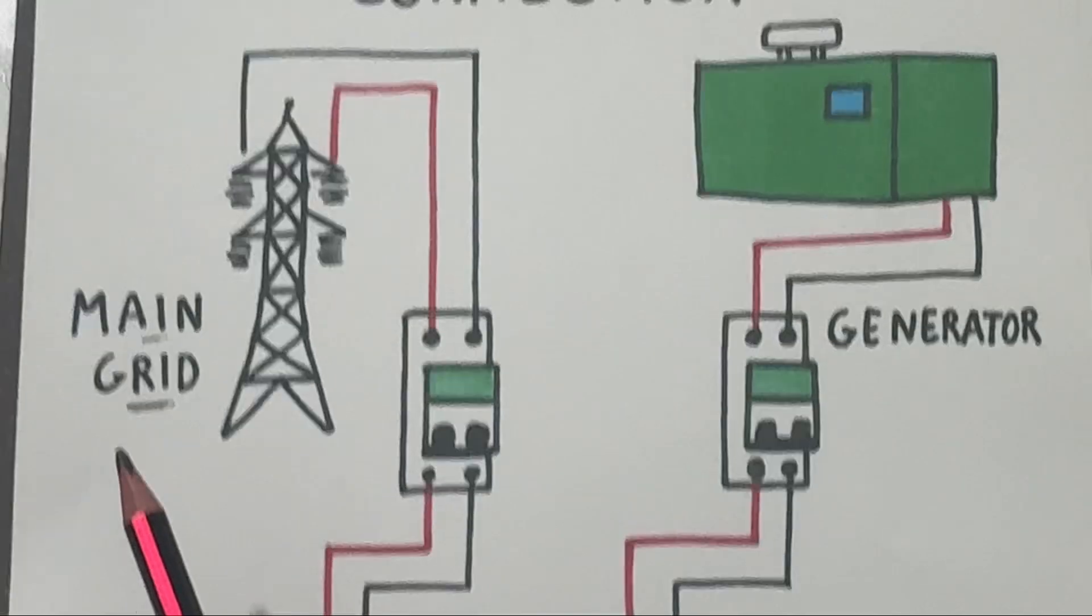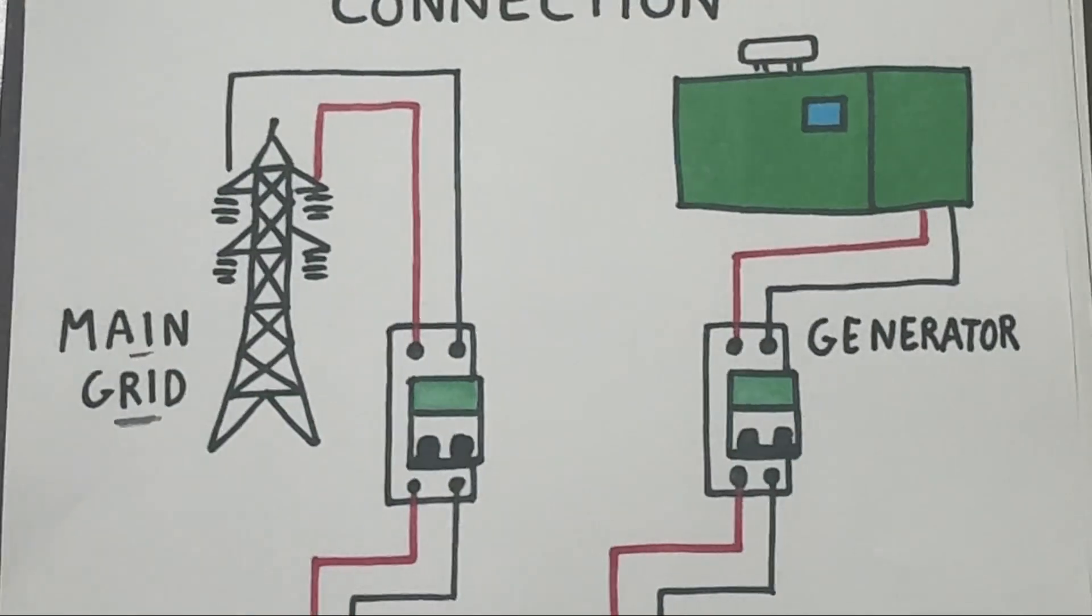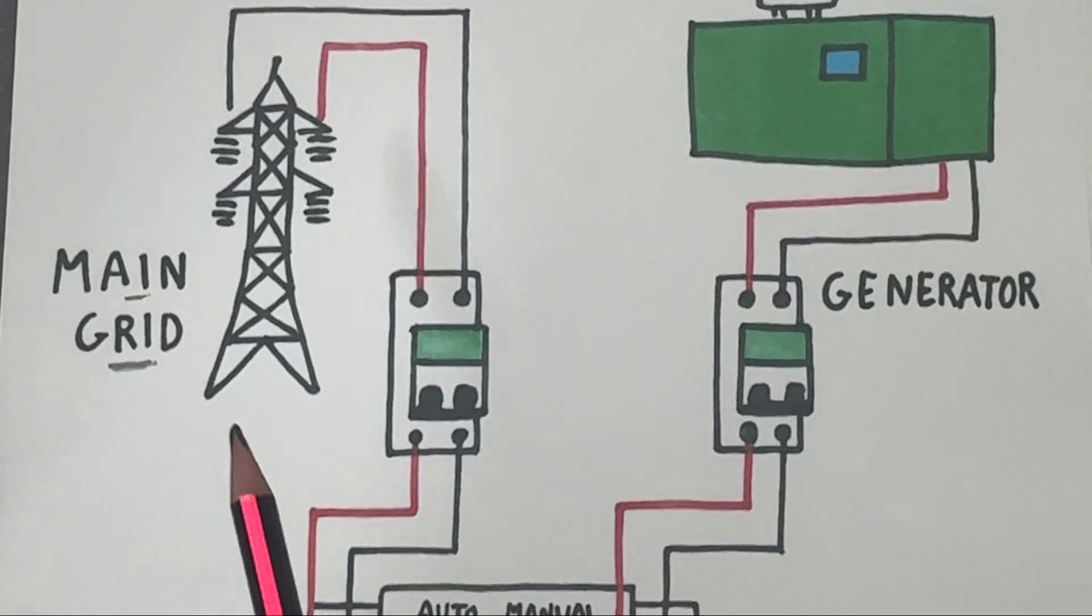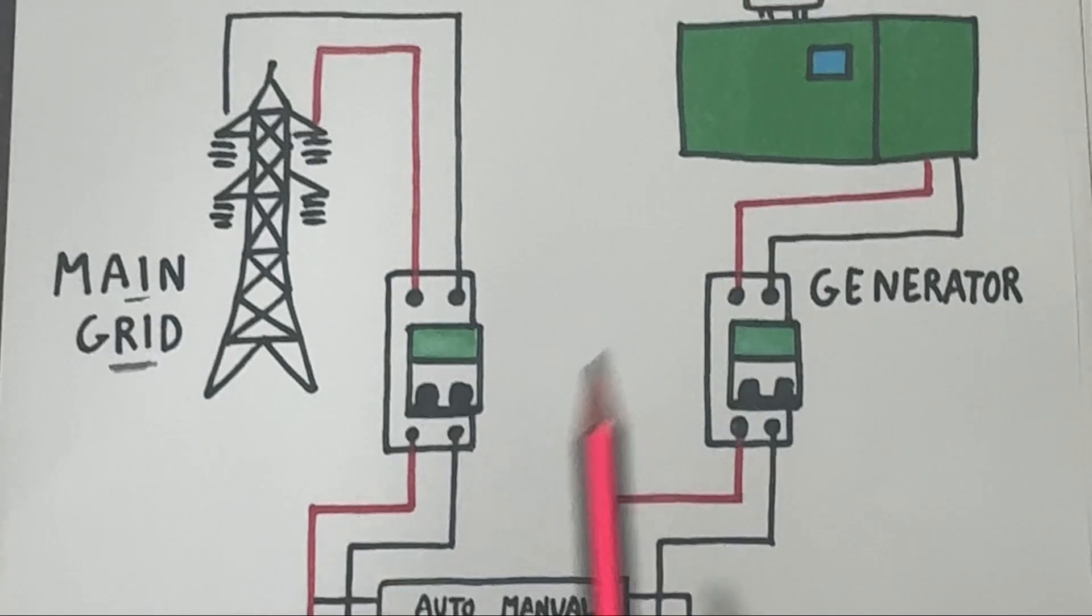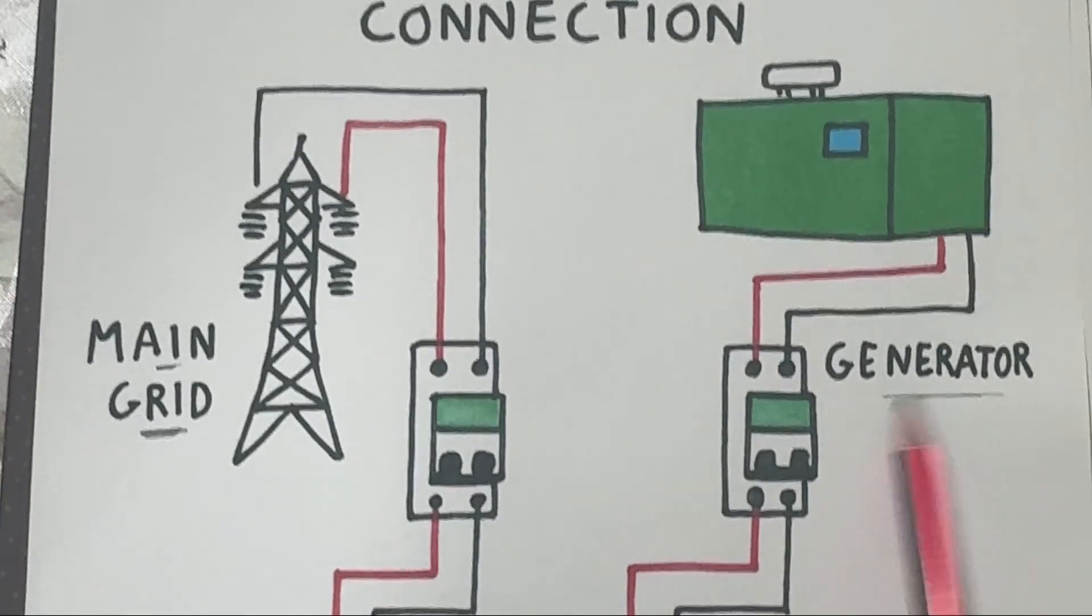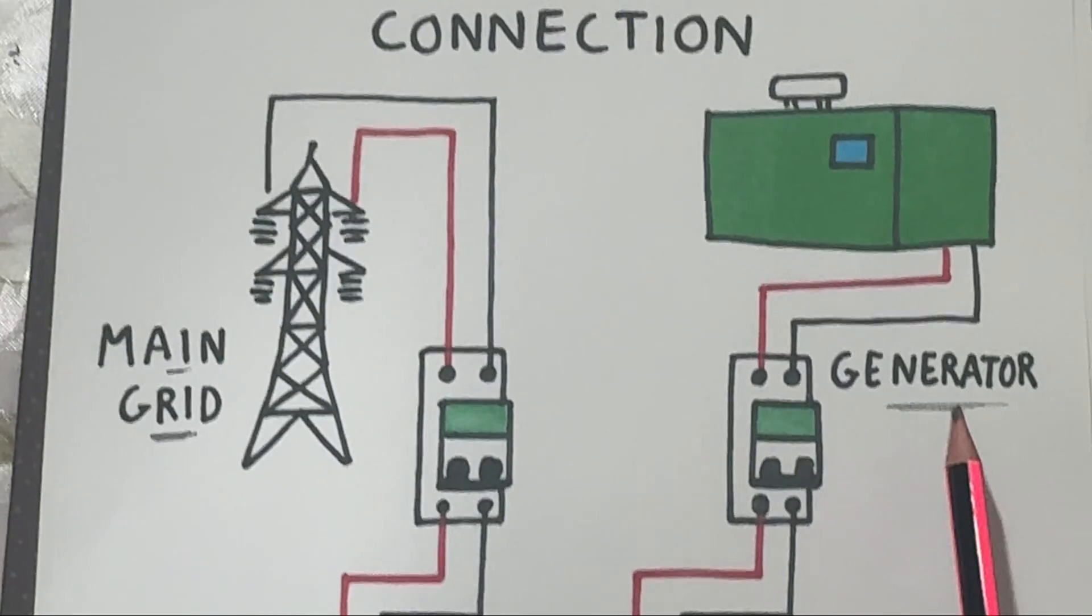The MCP ensures that if there's a short circuit or overload, the supply from the grid is safely disconnected.